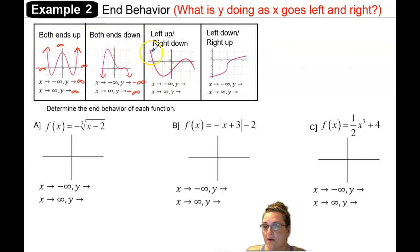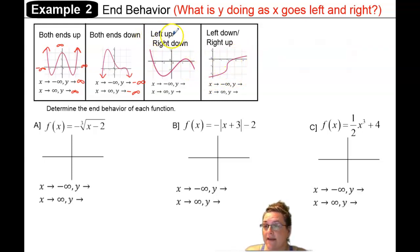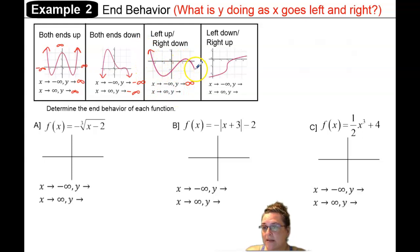A polynomial can also have one end up and another end down, and the difference is which is up and which is down. If the left end is up, then as x is approaching negative infinity on the left, the y is headed up to positive infinity. And then as x approaches positive infinity on the right, the y is headed down to negative infinity.